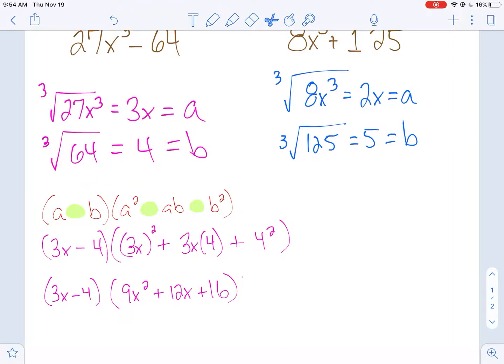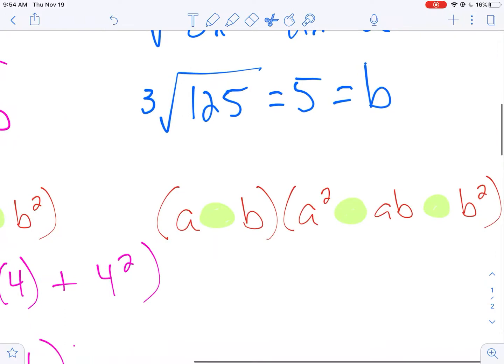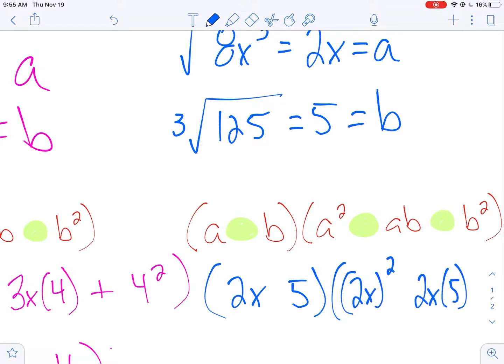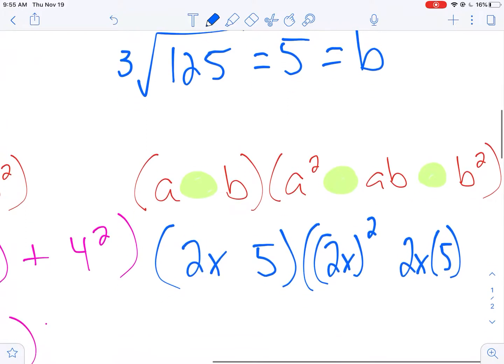So then I would take a, which is 2x. b, which is 5. And that's going to be 2x squared, the whole thing squares. And then 2x times 5. And then times b squared, which is going to be 5 squared.